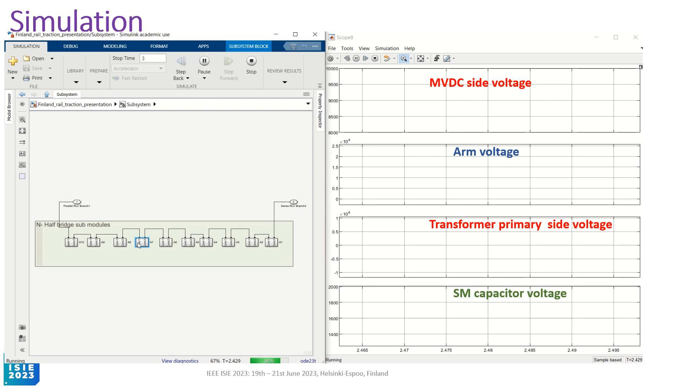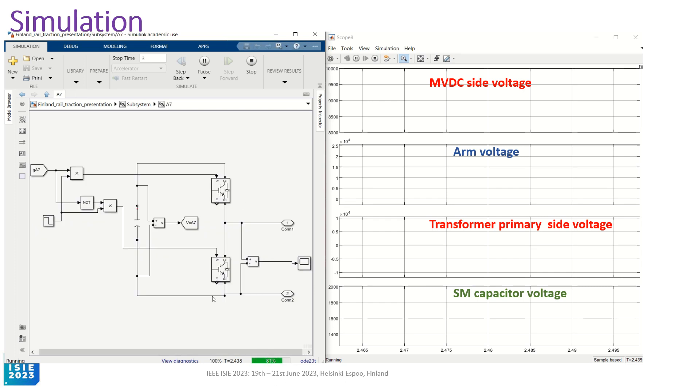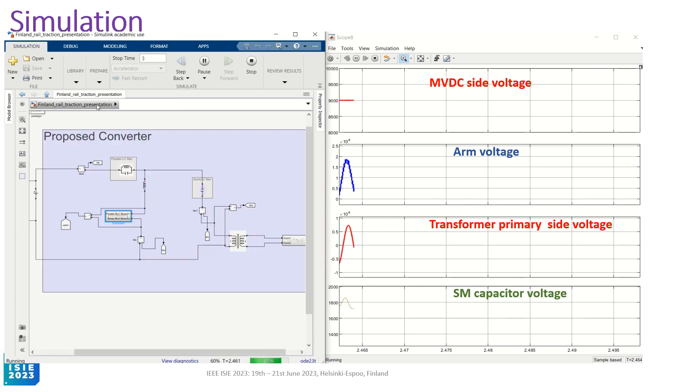And we will zoom into each sub-module now. If we zoom, you will see half-bridge sub-modules and a DC link capacitor. Now, these are the filters and the transformer which are tuned at 400 Hz.